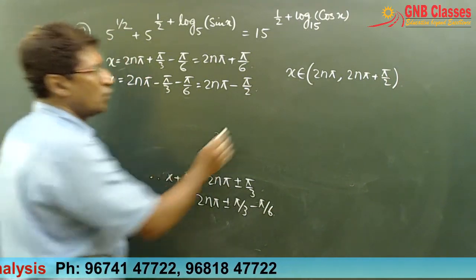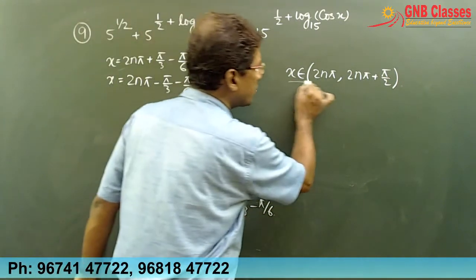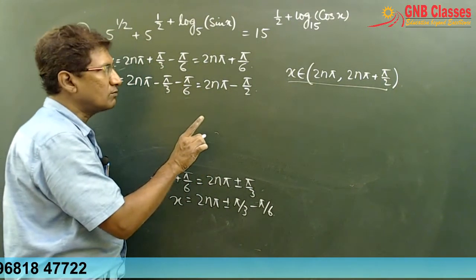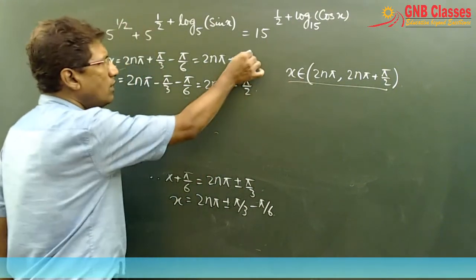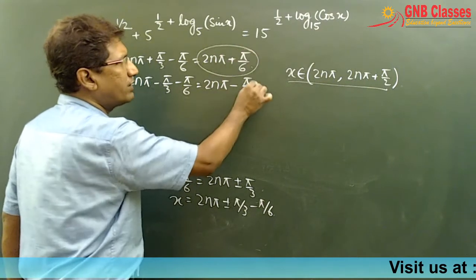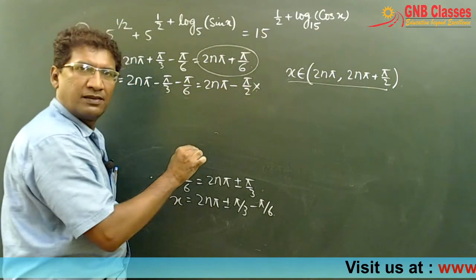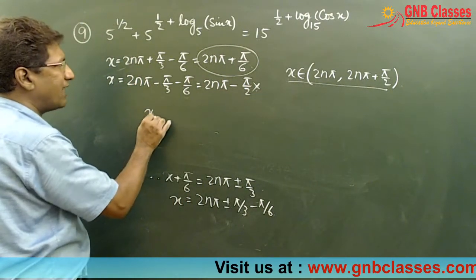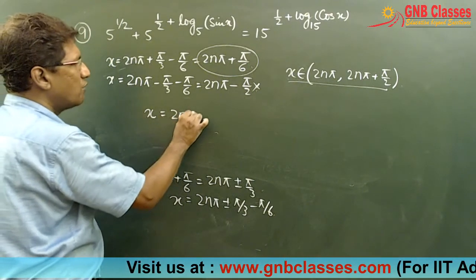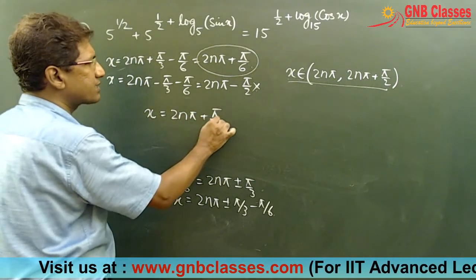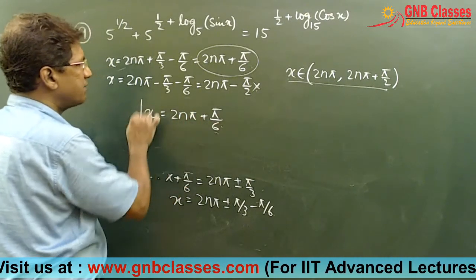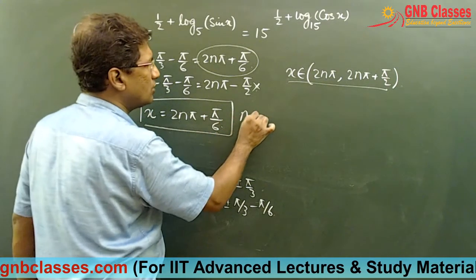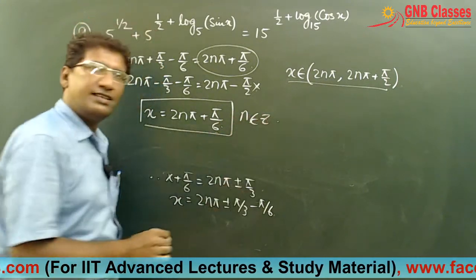Now, within the valid range we must accept only the values that fall in the defined region. Only x = 2nπ + π/6 falls within that range, not x = 2nπ − π/2. Therefore our final answer is x = 2nπ + π/6, where n belongs to any integer.